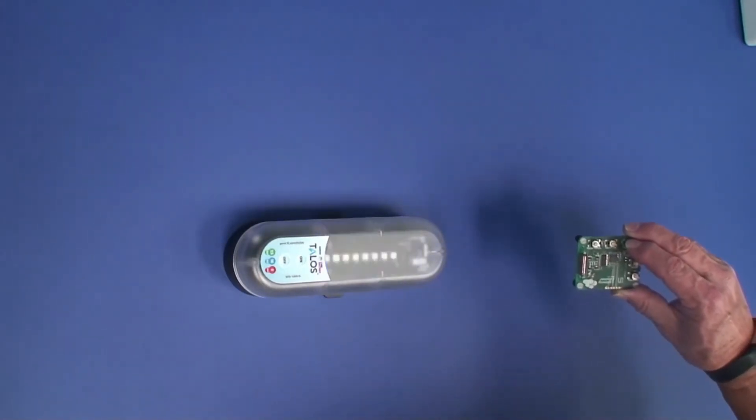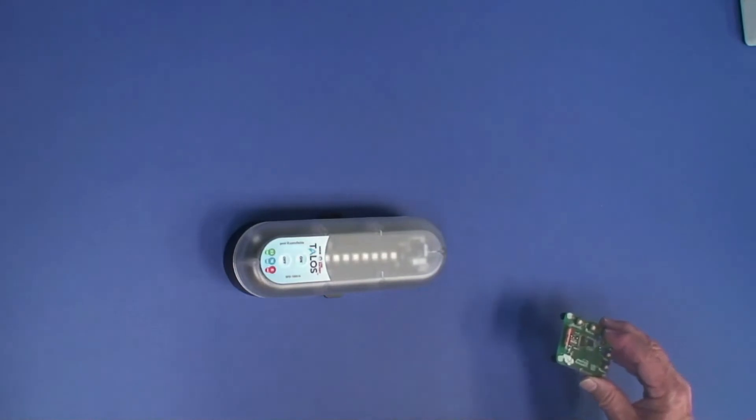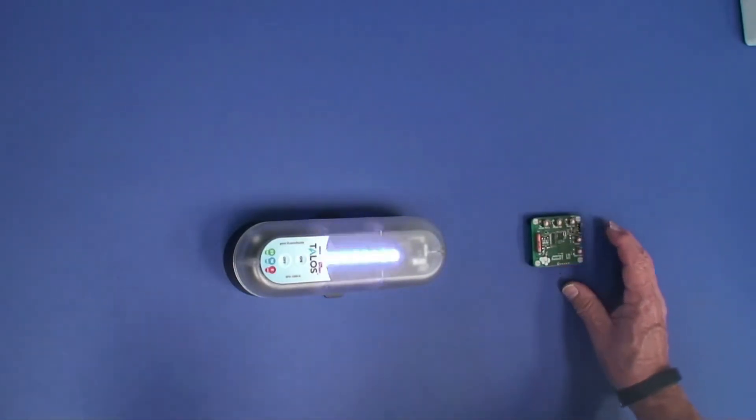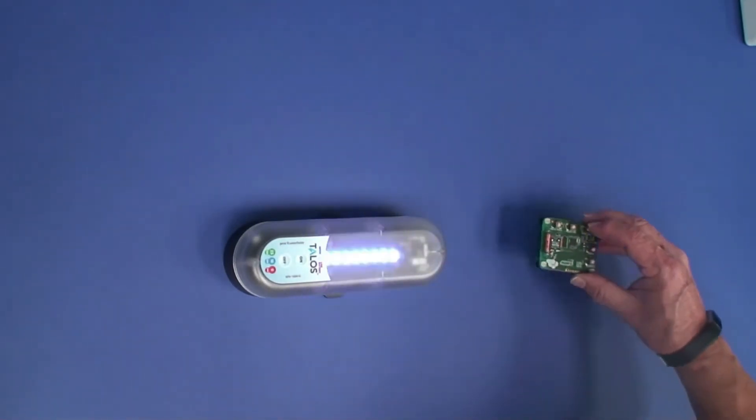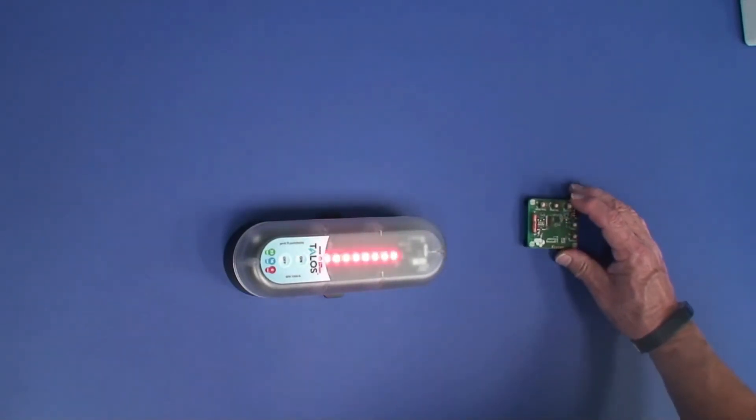There you can see it has detected lightning, and it starts to flash. Once it goes into detection mode, it will beep three times and indicate the range by the color. As the lightning gets closer, it will change to red, indicating the closest distance.